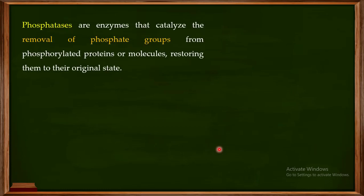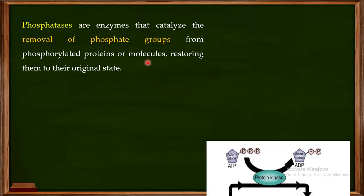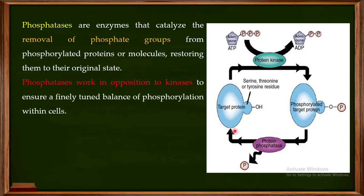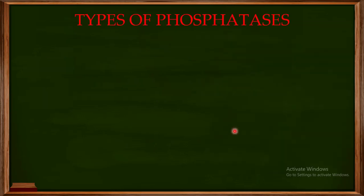Phosphatases remove a phosphate group from phosphorylated proteins or molecules, restoring them to their original state. Protein kinases add a phosphate group to the target protein on their serine, threonine, or tyrosine residues, converting them into the phosphorylated form. Protein phosphatases then remove this phosphate group from serine, threonine, or tyrosine, converting the protein back to its original state. So these phosphatases work in opposition to kinases.